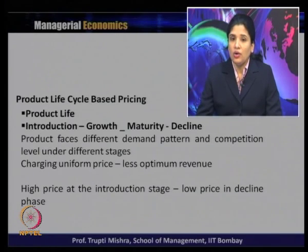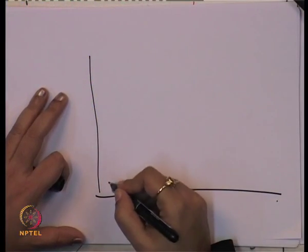Before going into the different techniques of product life cycle based pricing, we will understand the nature of all four stages — from introduction to growth to maturity to decline. We will first understand these four stages of the product life cycle and then see how sales generally increases or decreases across all four stages. To start with, we will draw a graph to understand these four stages.